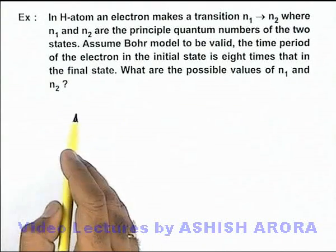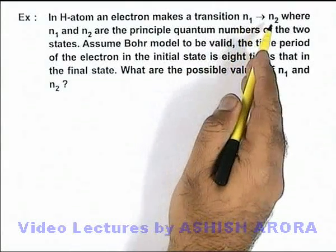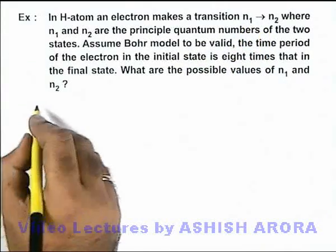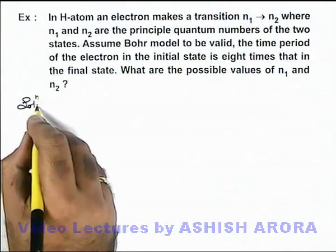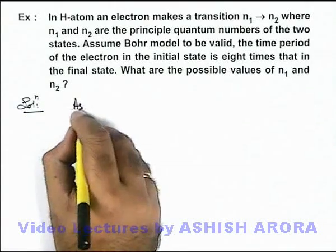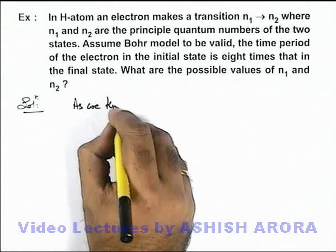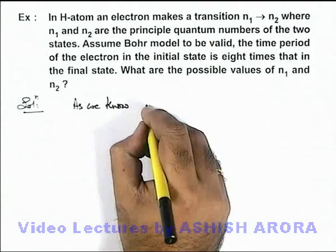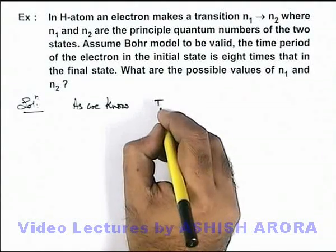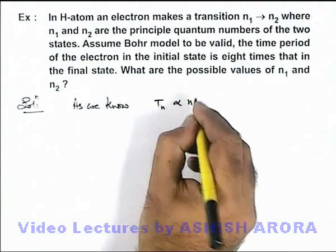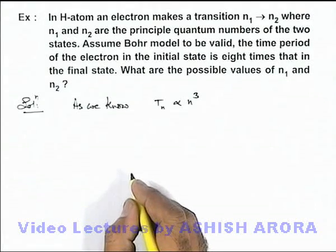Now in this situation, transition is from n1 to n2. So here we can see, as we know, we can write time period of electron revolution in nth orbit is directly proportional to the cube of quantum number n.